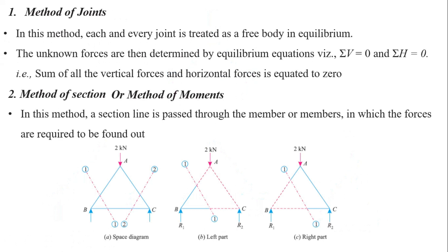In the method of joints, each and every joint is treated as a free body in equilibrium, and we use summation of vertical forces equal to 0 and summation of horizontal forces equal to 0. This method is preferred when we want to calculate forces in all the joints.